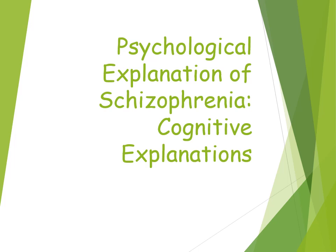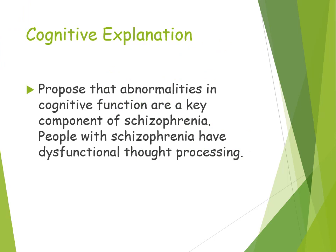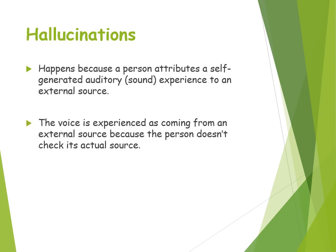Cognitive explanations of schizophrenia fit under the broad term of psychological explanations. The cognitive approach believes that abnormalities in cognitive function are the key factor in the development of schizophrenia, meaning people with schizophrenia have dysfunctional thought processes. In terms of explaining hallucinations, the cognitive approach believes they happen because a person attributes a self-generated auditory noise or sound to an external source — a sound they produced themselves but attribute to something outside of themselves.